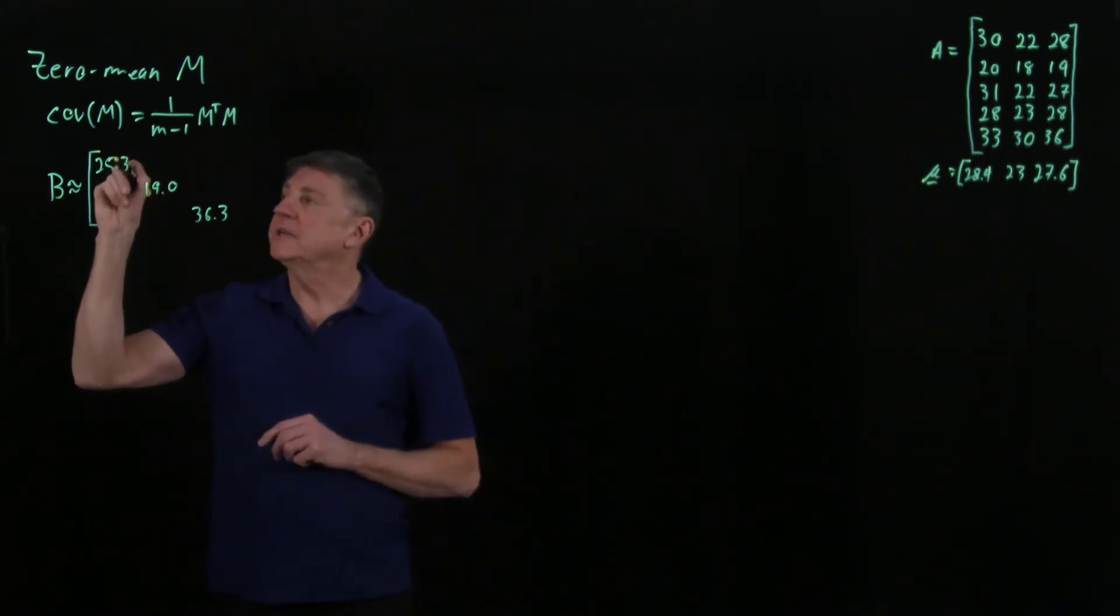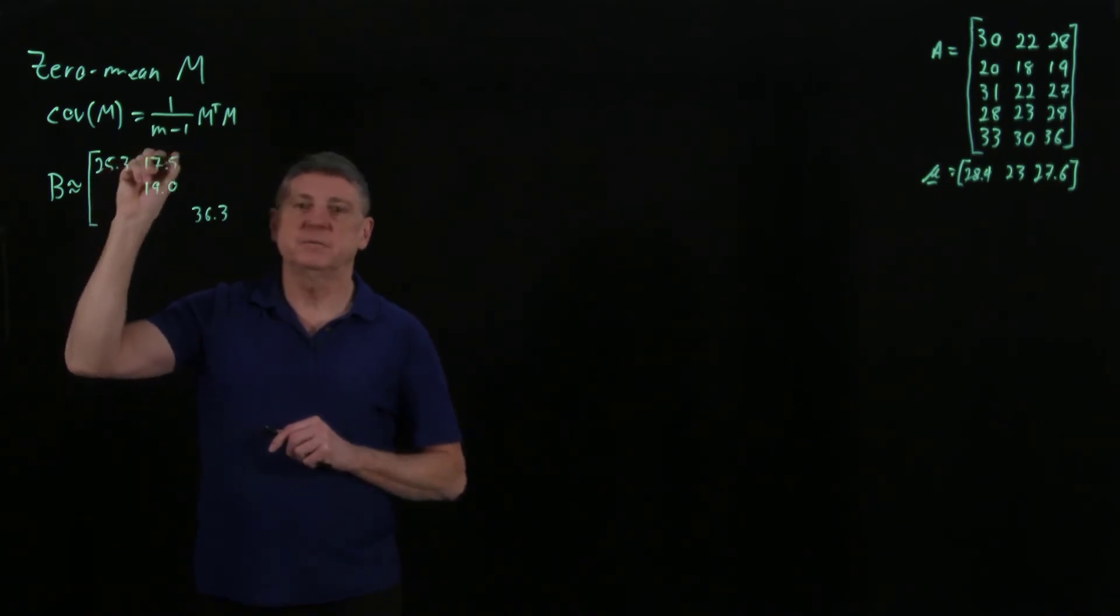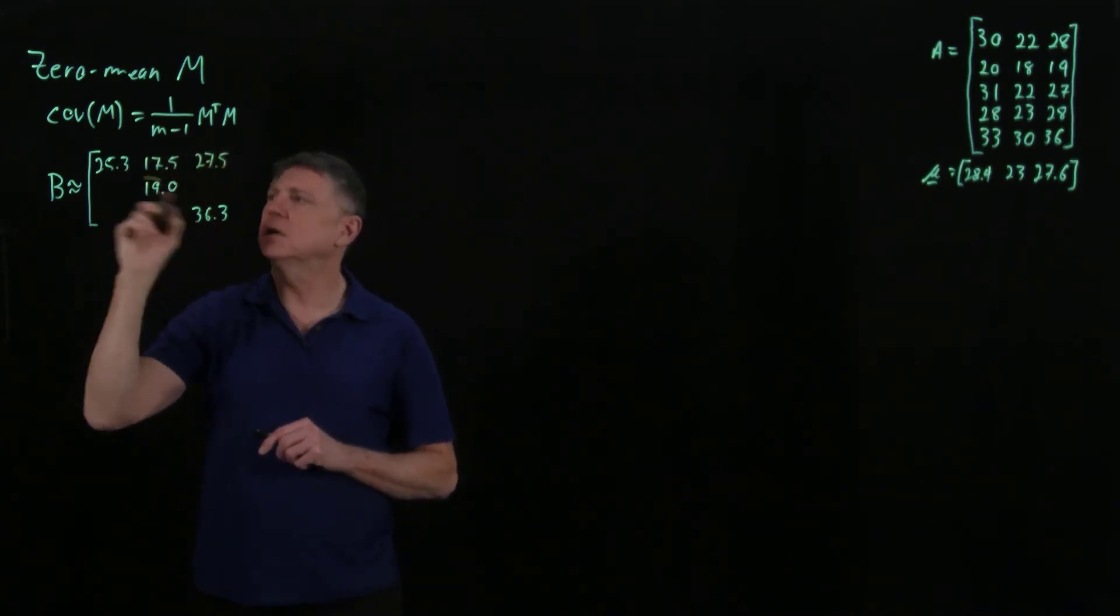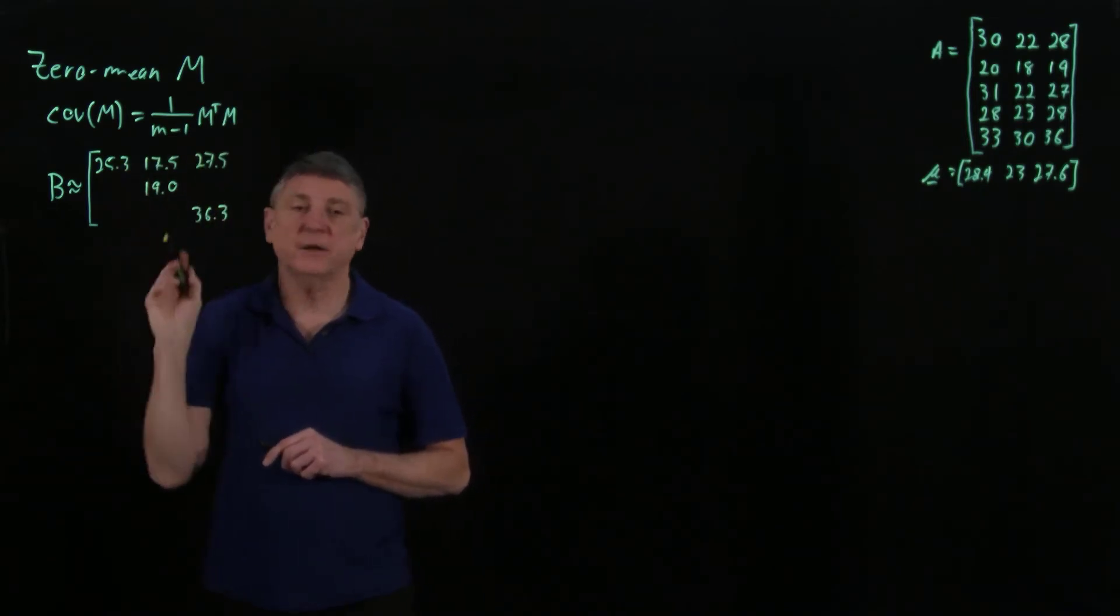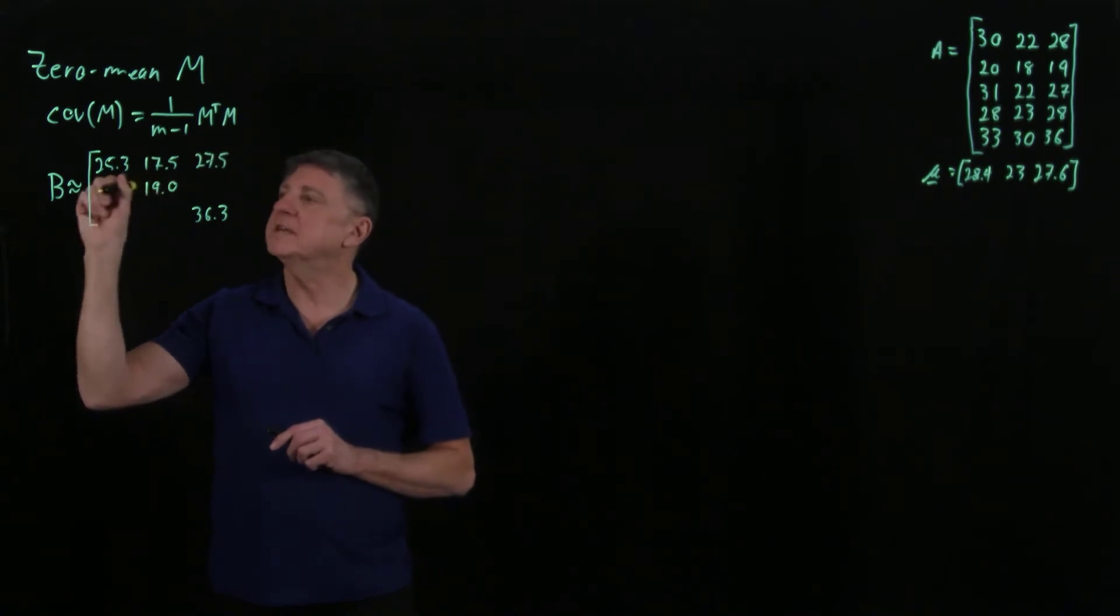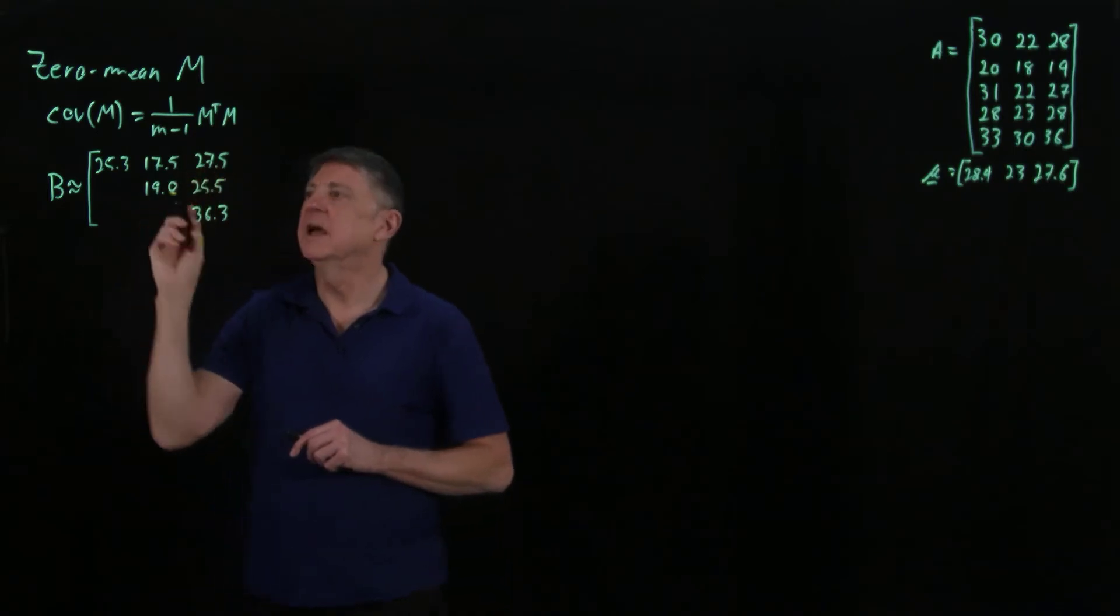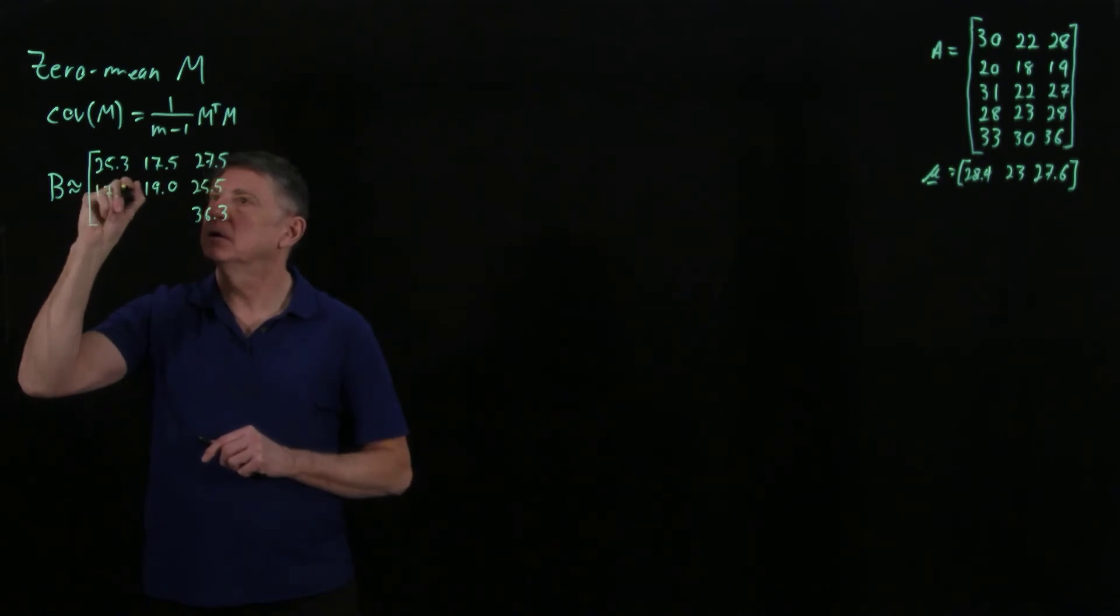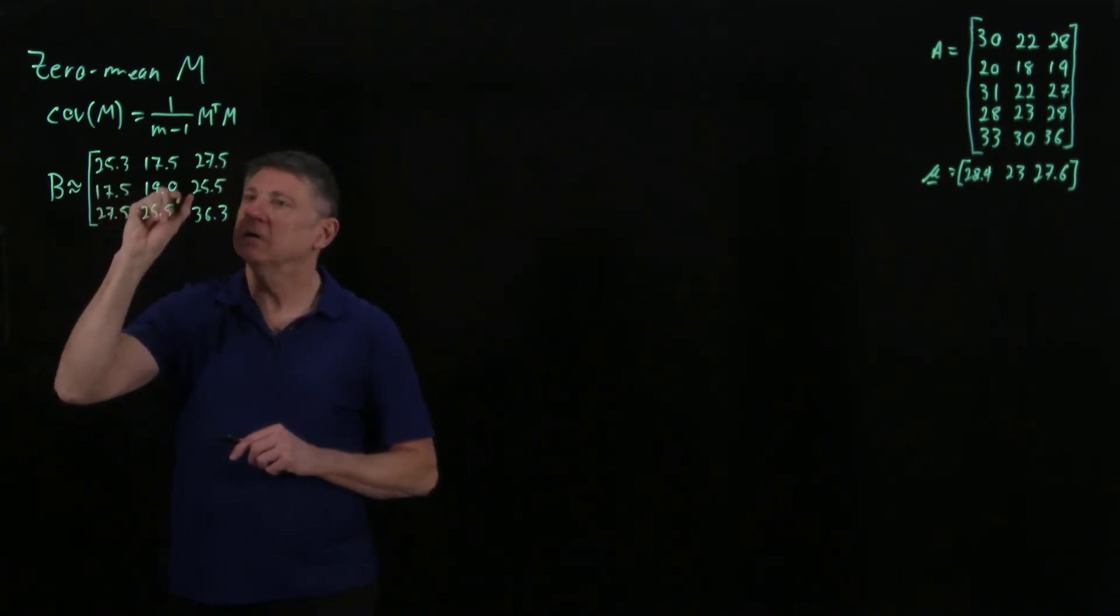How test one varied from test two was 17.5, and how test one varied from test three was 27.5, which was higher. It's interesting that the covariance of test one and test three was greater than the variance. Test two varied from test three by 25.5 approximately. Since this is a symmetric matrix, I simply copy the values over, and now have a covariance matrix.